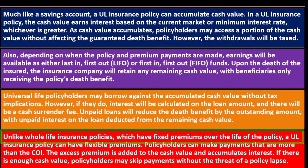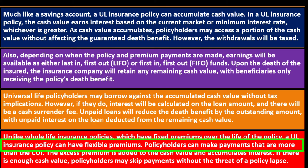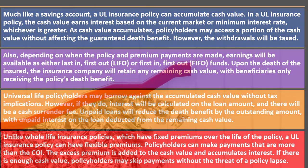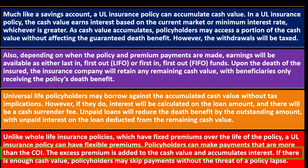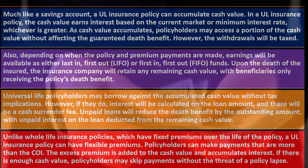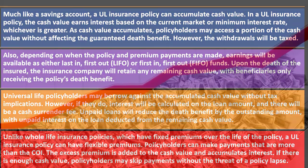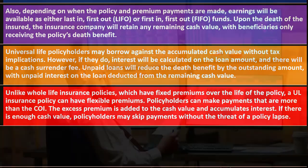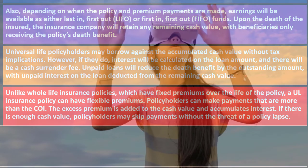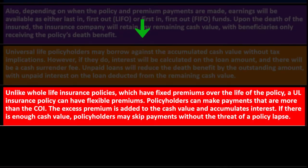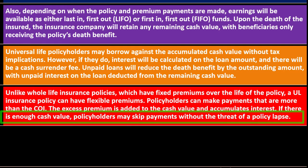Unlike whole life insurance policies, which have fixed premiums over the life of the policy, a UL — universal life insurance policy — can have flexible premiums. Policyholders can make payments that are more than the COI. The excess premium is added to the cash value and accumulates interest, which would increase that cash value component, hopefully increasing it more over time. Although in the current years the interest rate is probably fairly low, you can imagine in the future having higher interest rates, making that interest accumulation more significant. If there's enough cash value, policyholders may skip payments without the threat of a policy lapse.